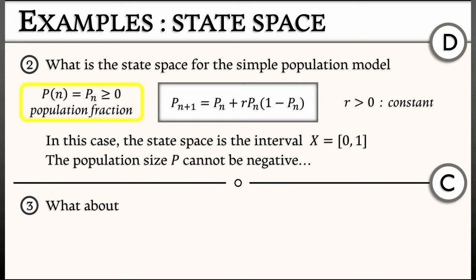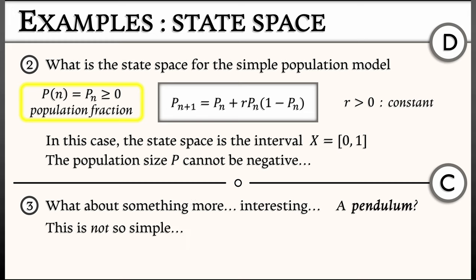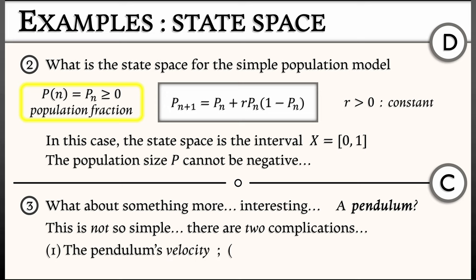Okay then, let's look at something a bit more interesting. Consider a pendulum that is swinging back and forth. Now this one is not so simple. You might think that the state space is determined by the angle at which the pendulum resides, but there are two complications.